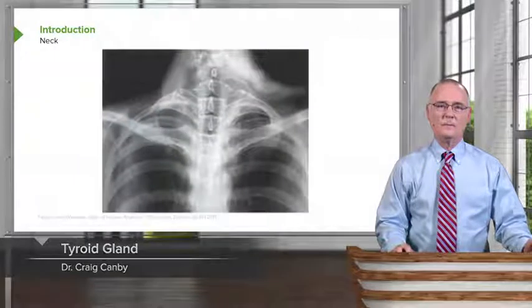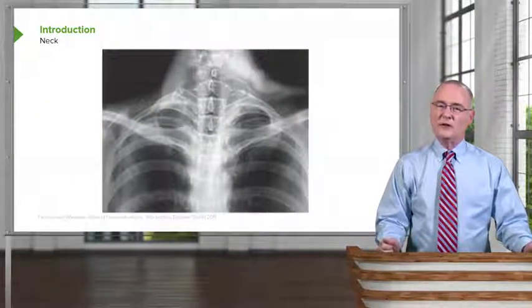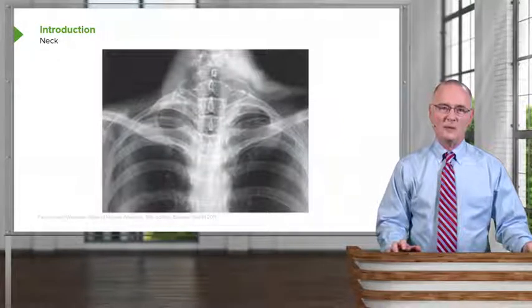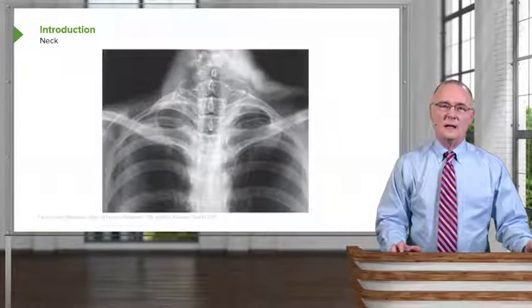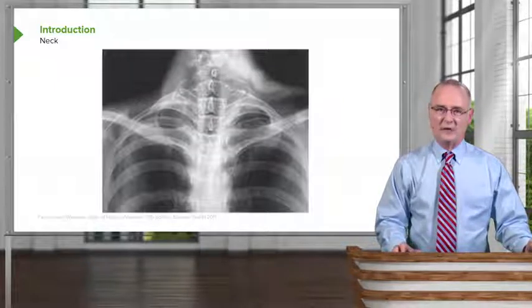Welcome to this presentation on the Neck, Part 2. During this presentation, we're going to cover three subject areas. We're going to begin by looking at the thyroid gland. Secondly, we'll visit the stellate ganglion. And then lastly, we'll visit the thoracic outlet. As we move through each of these three topical areas, we'll discuss clinical correlations.